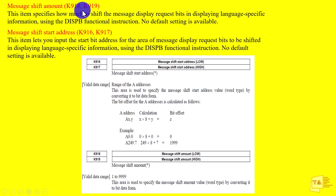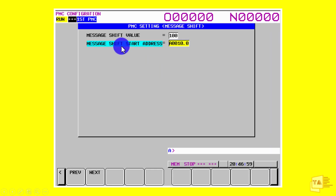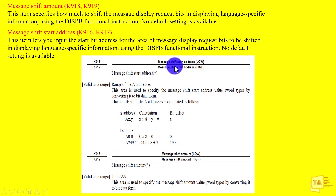So in K918, K919, K916, K917 — K916 and K917 are the message shift start address low and high. This is the shift start address. Address 810.0 is the shift start on. K916 and K917 use the number shift function. K918 and K919 hold the message shift amount low and high, including values up to 12999.